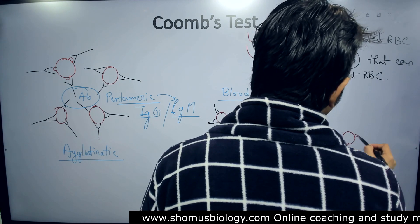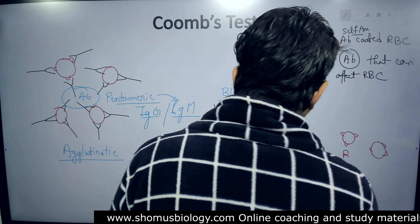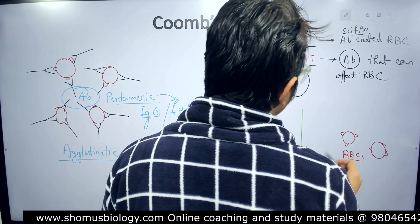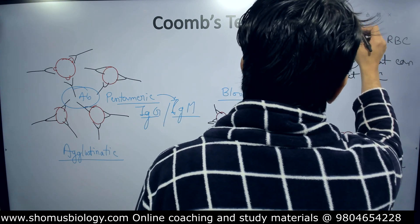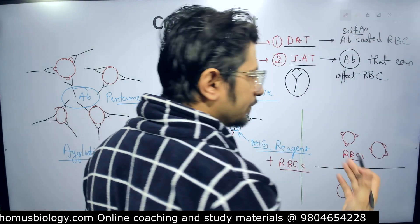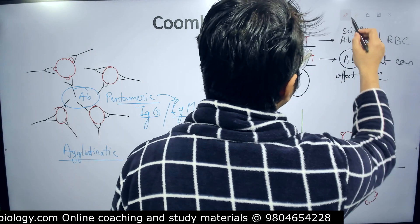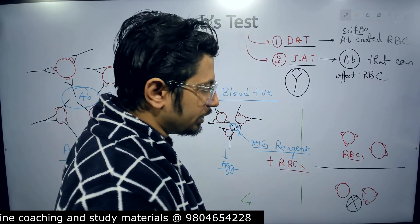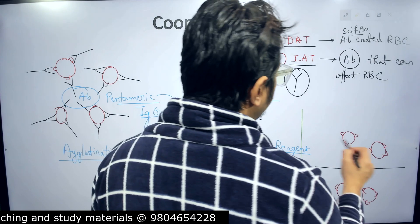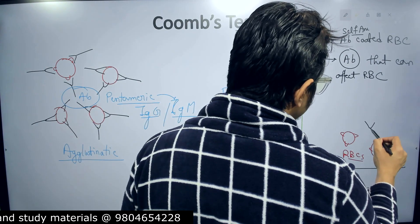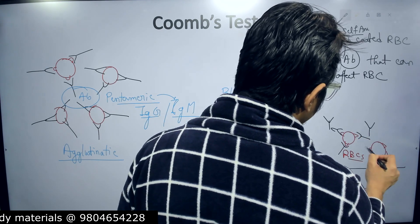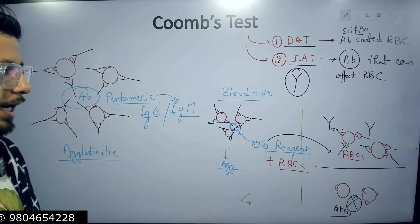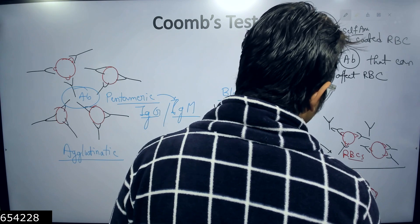For the indirect Coombs test, we are detecting the presence of antibodies. In this case, we need to provide RBCs with antigenic determinants on their surface as a reagent. Along with AHG, we also add RBCs. There are two situations: either there is antibody present in the patient sample, or there is not. If there is no antibody, adding AHG cannot cause agglutination. But if there is antibody in the patient serum, those antibodies will bind to and coat the added RBCs.